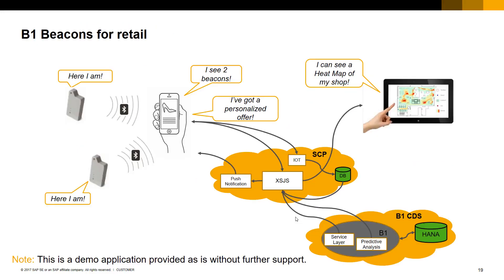B1 Beacons for Retail is a solution demonstrated at the SMB Innovation Summit 2017. This solution generates personalized offers to customers on their mobile phones, based on their location in the shop as well as their SAP Business One buying history. Beacons are used to detect customers' location. Customers can accept the offers and purchase the proposed items as well as other items in the shop without going to the cashier. The Service Layer is used to create the orders in SAP Business One for each specific customer. This solution was developed and implemented on the SAP Cloud Platform, using SAP Cloud Services like Internet of Things, Push Notification, SAP HANA Access Engine and SAP HANA Database. Please note that this is a demo solution provided as-is without further support. For more details, please check the URL provided here pointing to an SAP Community blog.